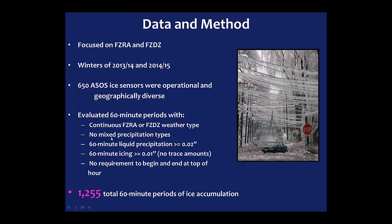We also required liquid precipitation of 0.200 inches or greater, focusing on freezing rain rather than lighter events, and no trace ice amounts since we couldn't calculate ice-liquid ratios with traces. The period could begin at any five-minute mark, not just top of the hour, to avoid biases. Over the two winters, we collected 1,255 total 60-minute periods of ice accumulation — a robust number of hours of freezing rain to analyze and break down.